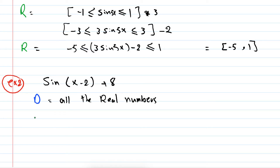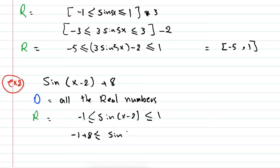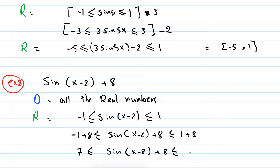For the range, we know that for sine(x - 2) the range is between -1 and 1. Here I have everything plus 8, so I add 8 to everything: -1 + 8 ≤ sine(x - 2) + 8 ≤ 1 + 8, giving 7 ≤ sine(x - 2) + 8 ≤ 9. So the range is between 7 and 9, inclusive.